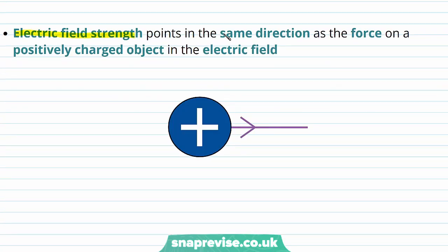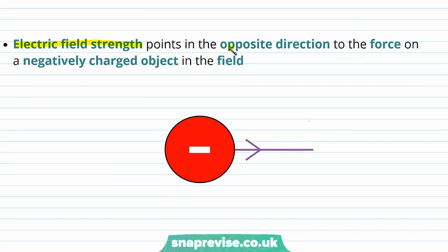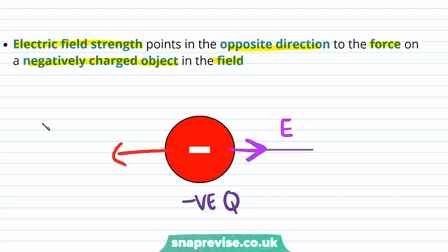Electric field strength points in the same direction as the force on a positively charged object in the electric field. So for our positively charged object, the force F on it is in the same direction as the electric field strength E. Electric field strength points in the opposite direction to the force on a negatively charged object in the field. So for a negative charge Q, the electric field strength is pointing in the opposite direction to the force on that negatively charged object.